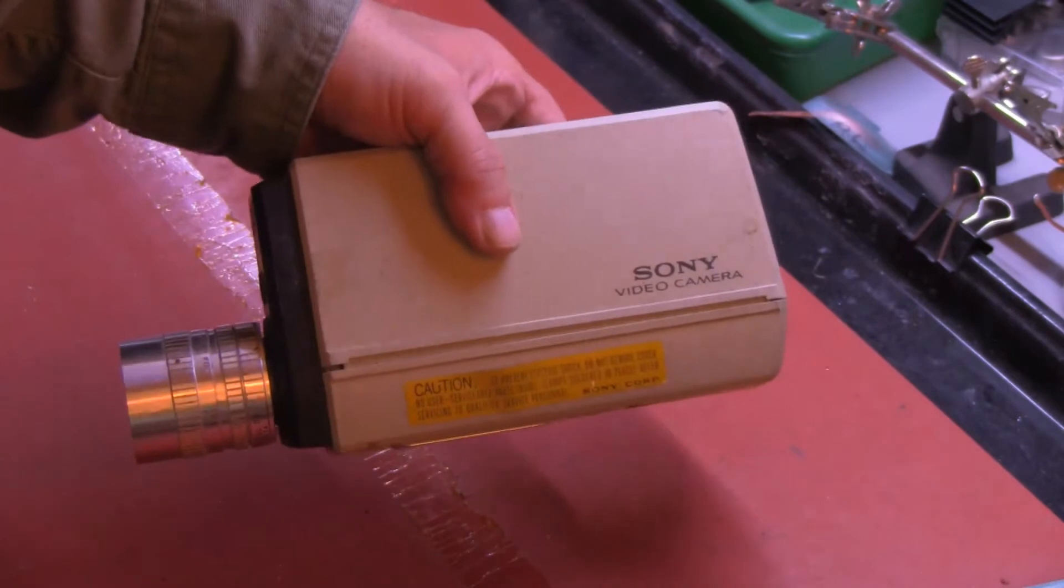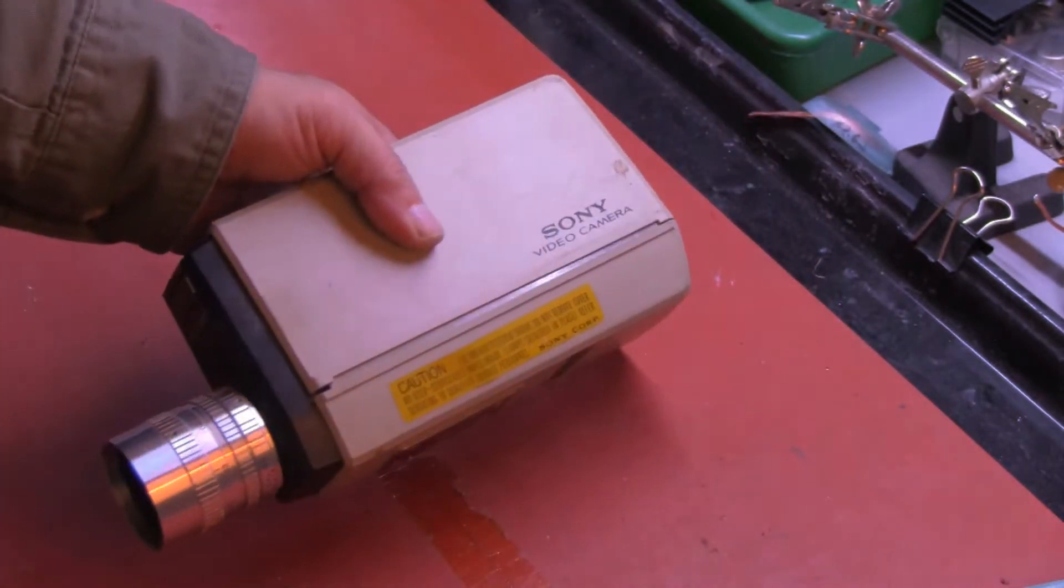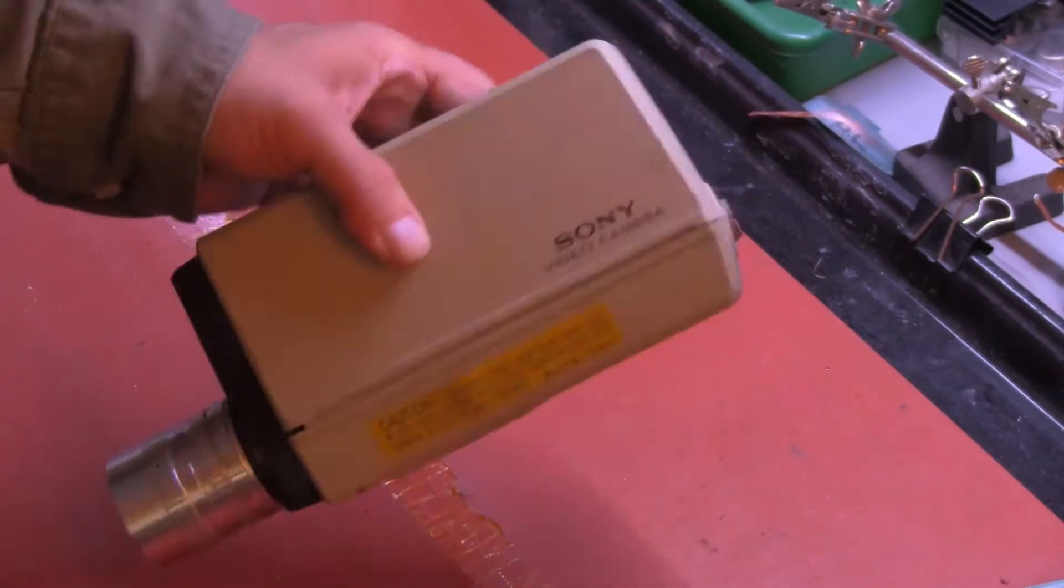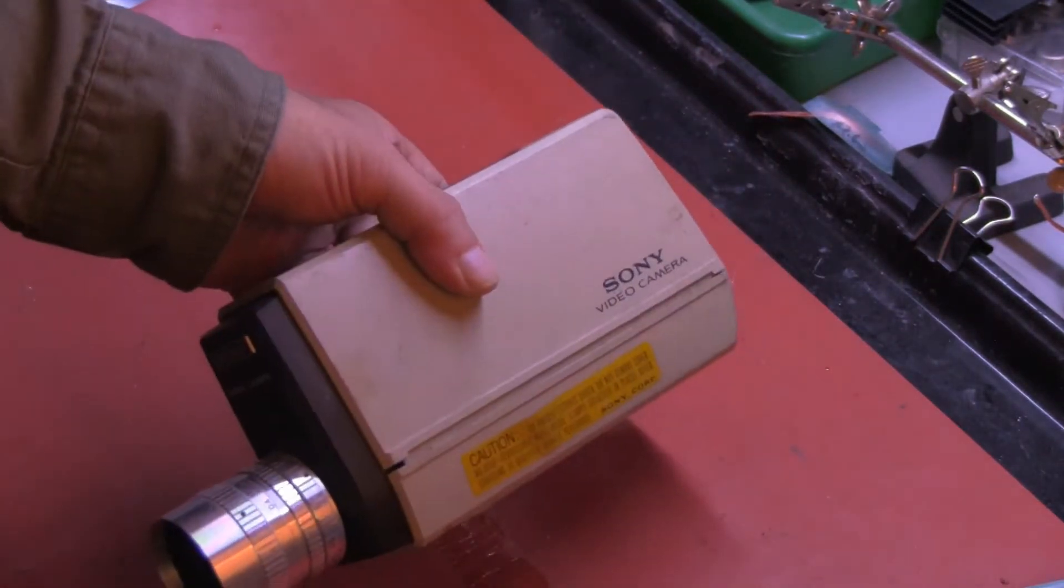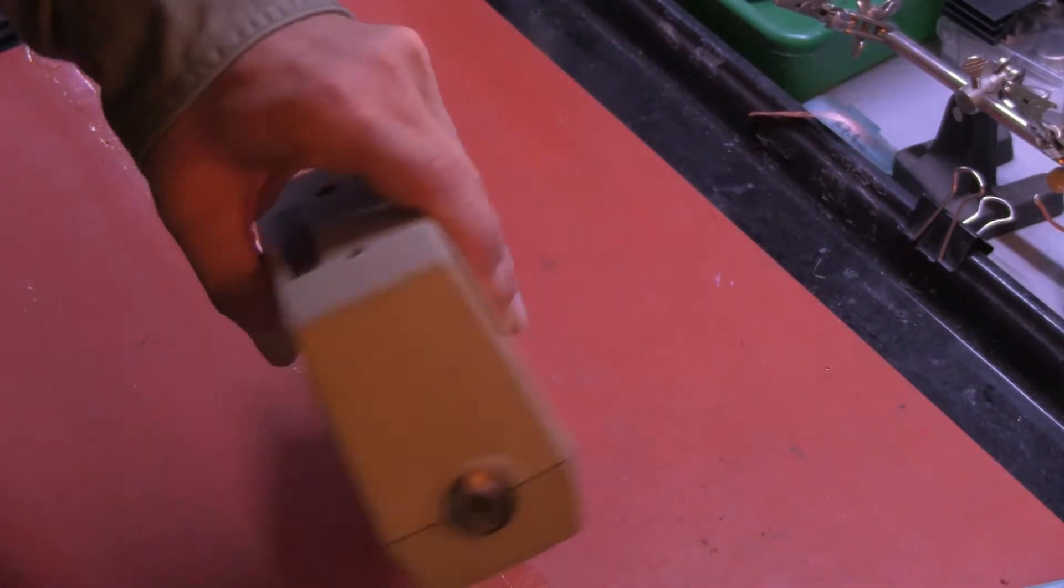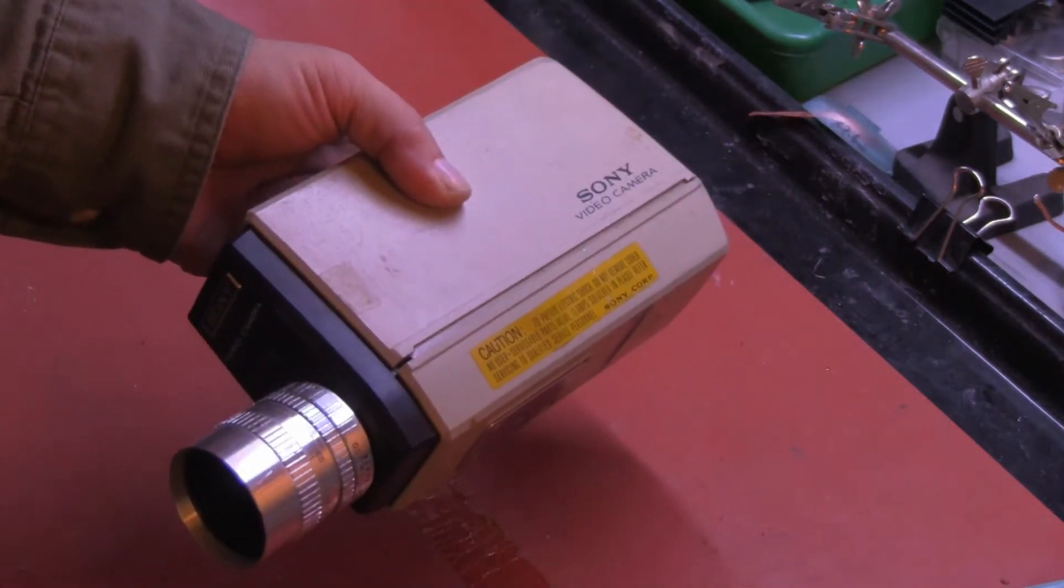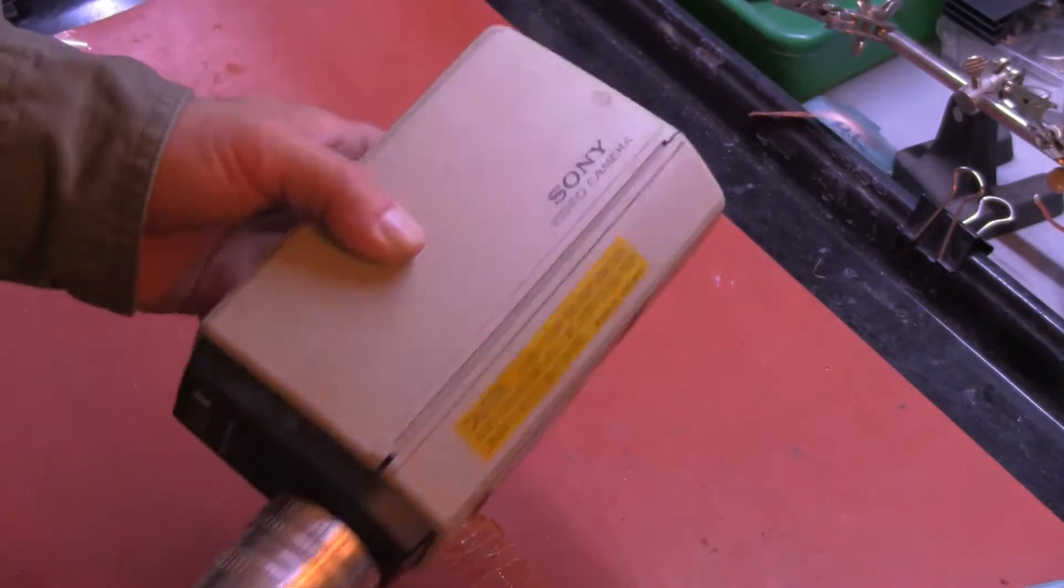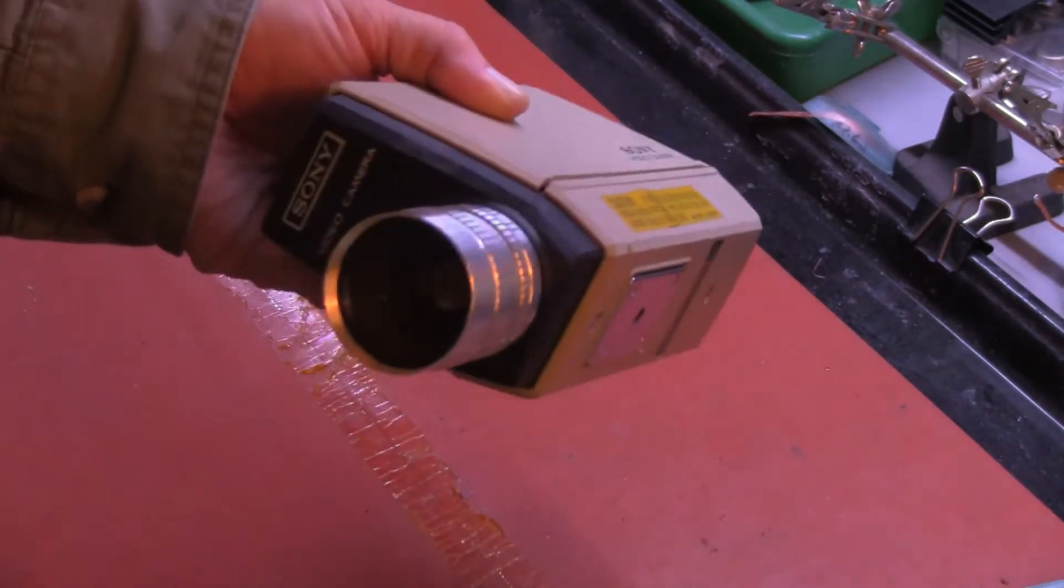When you find these, this is the typical way you find it. No power pack. So I'm going to show you today how to convert this camera to run on external 12 volts, and it will operate just fine. Because other than the power, it is a complete ready-to-go black-and-white Vidicon tube camera. So let's get started.